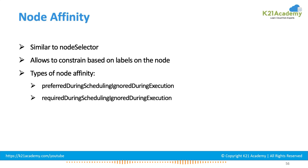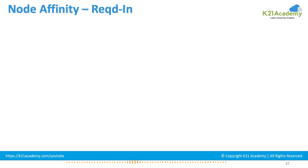The second type — required during scheduling — is a mandate, a hard rule that must be met. If it is not met, your pod will go to pending state and will not get placed unless the required condition is satisfied. There are two sections: the affinity section and the anti-affinity section. In both, you have two types of constraint: a soft type with the preferred condition, and a hard type with the required condition.